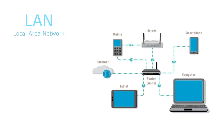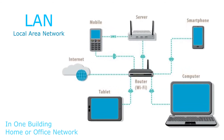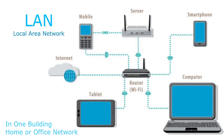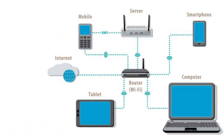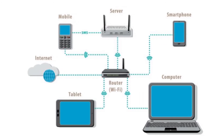A local area network, or LAN, is a collection of devices connected together in one physical location, such as a building, office, or home. The purpose of a LAN is to provide access to shared resources such as printers, network-enabled scanners, file servers, mail servers, and network-attached storage. The computers in a LAN connect to each other via ethernet cables or Wi-Fi. A LAN network over Wi-Fi is known as a wireless LAN, or WLAN.